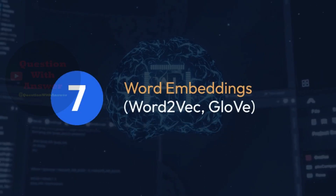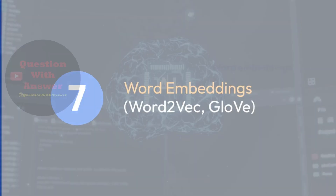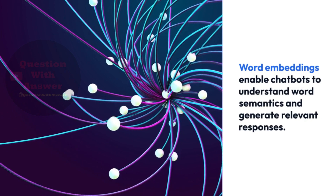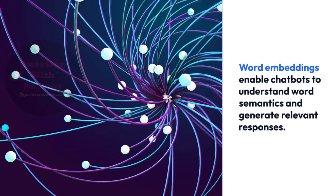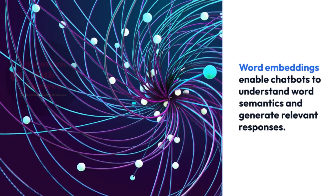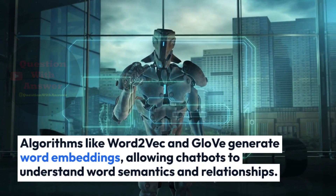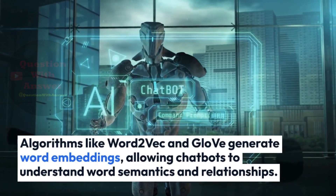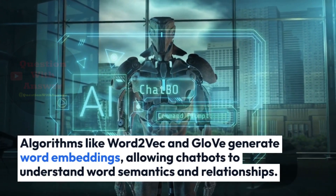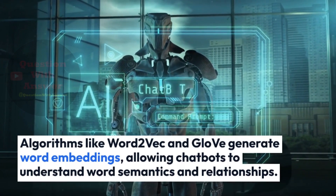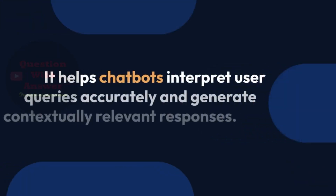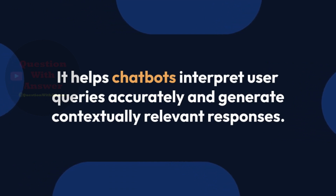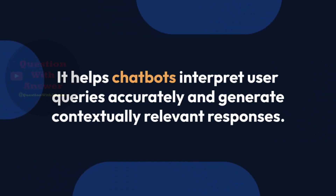7. Word Embeddings: Word2Vec and GloVe. Word embeddings enable chatbots to understand word semantics and generate relevant responses. Algorithms like Word2Vec and GloVe generate word embeddings, allowing chatbots to understand word semantics and relationships. This helps chatbots interpret user queries accurately and generate contextually relevant responses.